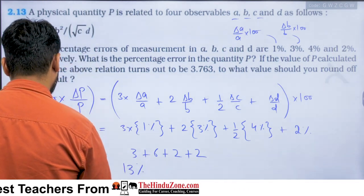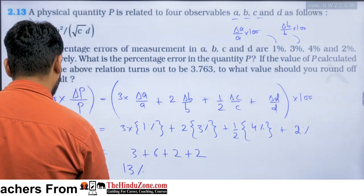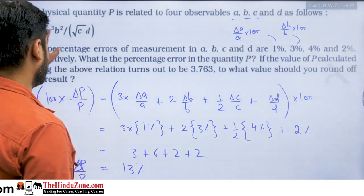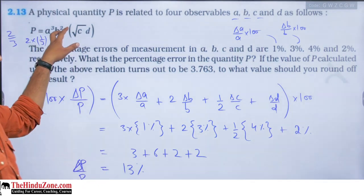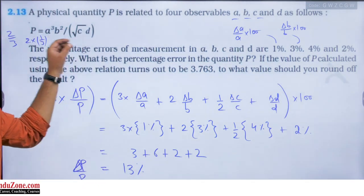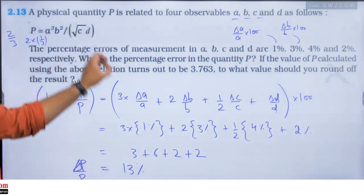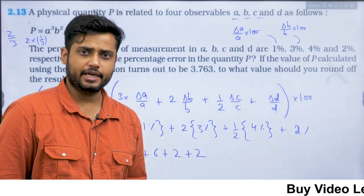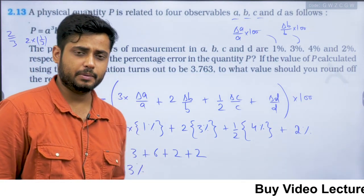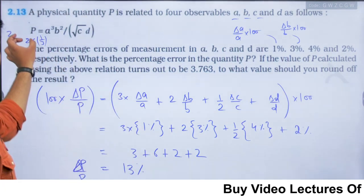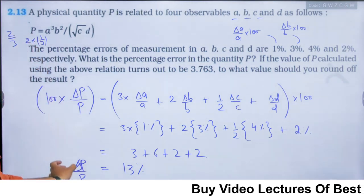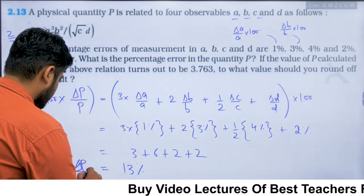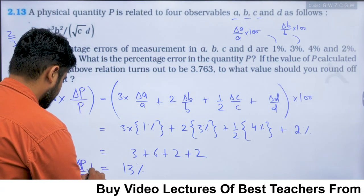The percentage error in P is 13%. If we know the errors in A, B, C, D and how P is related to A, B, C, D, then we can find the percentage error in P as well.